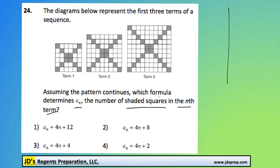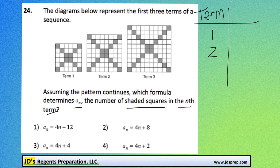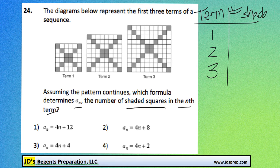It'll help to create a table of values here. On the left-hand side we'll have the term number - 1, 2, 3 - and then the right will be the number of shaded squares. Let's count here. The first term starts off with 1, 2, 3, 4, 5, 6, 7, 8, 9, 10, 11, 12.